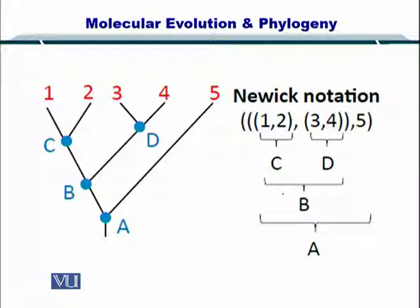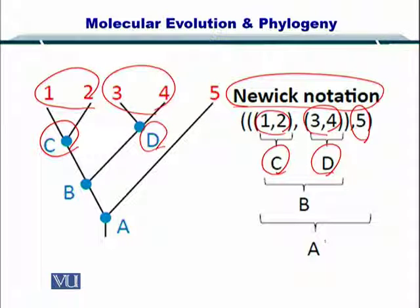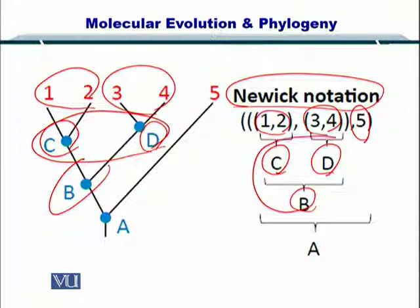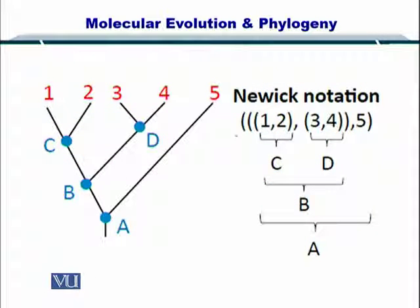If you want to represent this tree in the form of text, you can use the Newick notation as shown here. One and two are related by C, three and four are related by D, and five is related to C and D through B. You can utilize this Newick notation as a substitute for this entire tree.